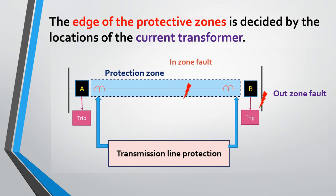In this diagram, CT1 and CT2 decide the protection zone for this particular transmission line. If a fault occurs between these two CTs, it will be sensed by the relay coils, which will trip circuit breakers A and B. If a fault occurs outside the zone or on the bus bar, these CTs will not sense it and will not trip the circuit breakers, which may result in complete shutdown of the power system. That is why protection zones are very important and are decided by current transformers.